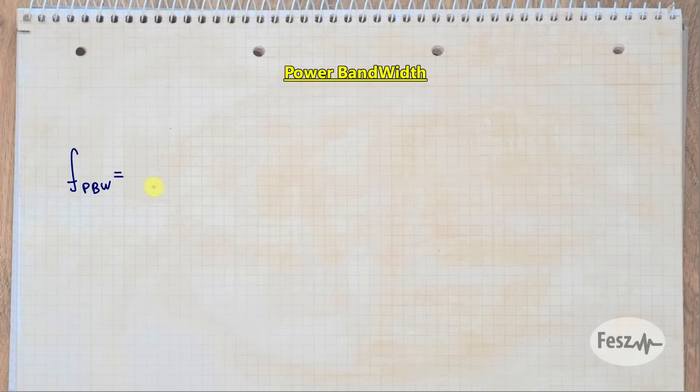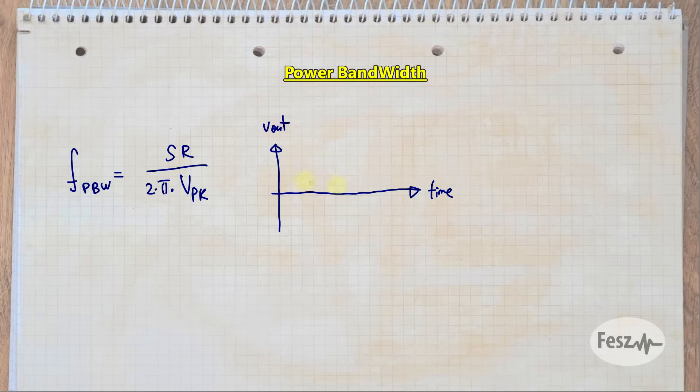This brings us to the main topic of the day, the power bandwidth. In short, it's a parameter which expresses the frequency at which you can output a sine wave of a certain peak amplitude before being limited by the slew rate. The parameter is independent of the gain that is being used, and it only expresses if the op-amp's output stage can create a certain signal or not.